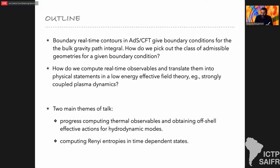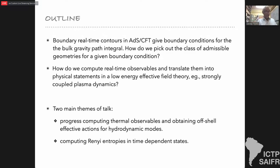Given one of these contours as a boundary condition for the ADS-CFT path integral, which bulk geometry gives me the appropriate stationary phase approximation to the bulk gravitational effective field theory? And from there, how do I compute real-time observables and translate them into physical statements in the low energy effective field theory? For example, one question I've been very interested in is deriving the effective field theory of systems with conserved charges — in particular, strongly coupled plasma data. Today I'll cover two things: computing thermal observables and computing entropy.